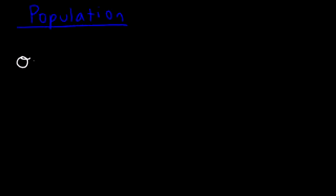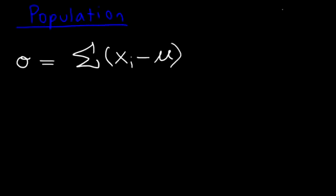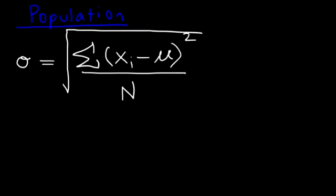In this video we're going to calculate the standard deviation of a set of numbers. There are two formulas you need to be aware of. The first one is the population standard deviation, represented by the letter sigma. It equals the sum of all the differences between every point in the data set and the population mean (mu), squared, divided by n — the total number of values — and then you take the square root of the whole result.